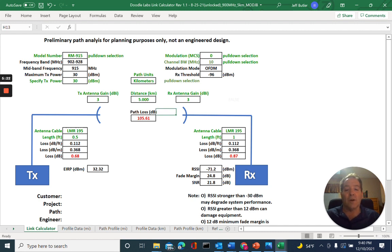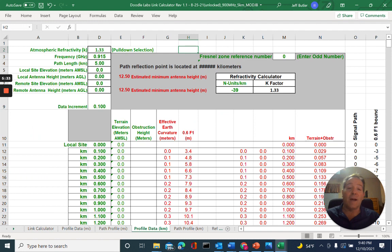Now let's look at the end of the path profile data for our particular design example. We'll do that in terms of kilometers. So let's go to the fourth tab here, profile data in kilometers.